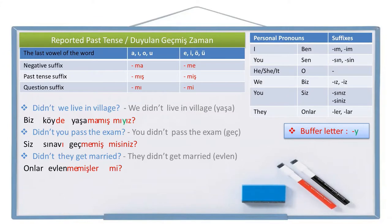Okay friends, so we form the reported past tense negative question sentences and the reported past tense positive question sentences according to this order. If you have any questions, please write them in the comment section. Hope to see you in our following lessons. For now, goodbye. Hoşçakalın.